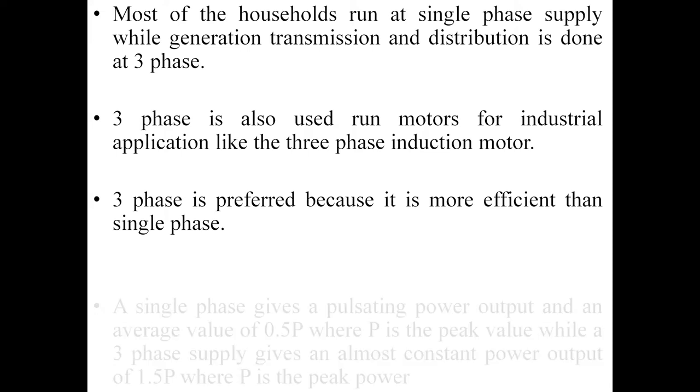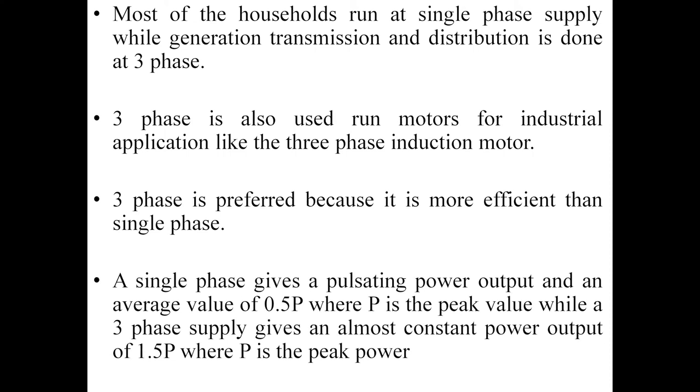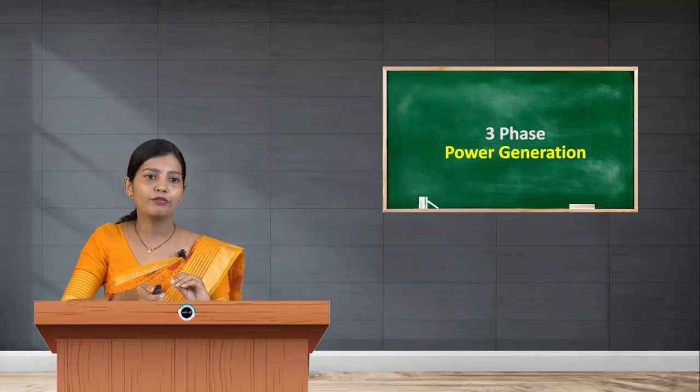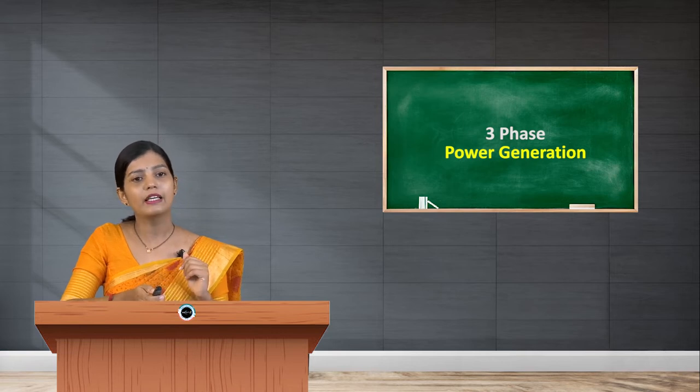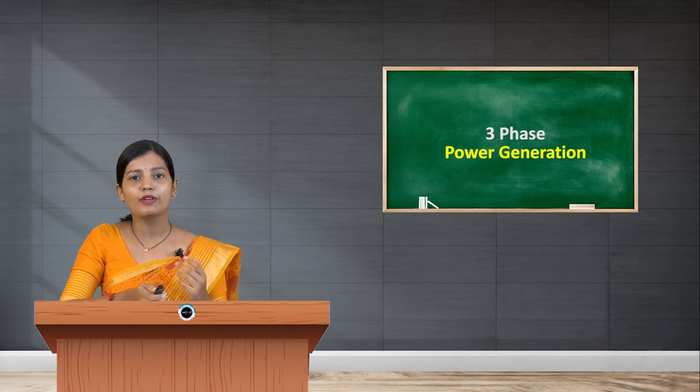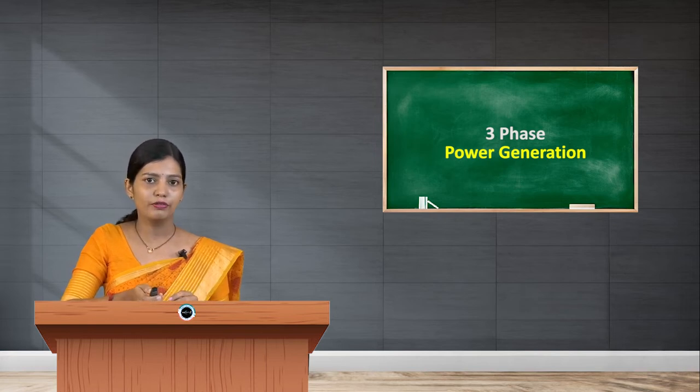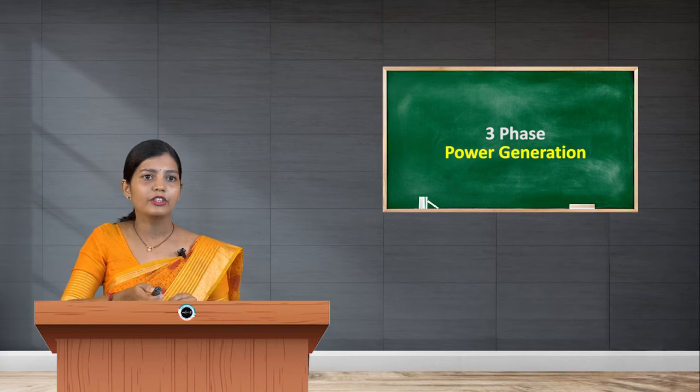A single phase gives a pulsating power output with an average value of 0.5P, where P refers to the peak value. While a three-phase supply gives an almost constant power output of 1.5P, where P is the peak of power. So due to all these advantages, three-phase is preferred over single-phase power systems.